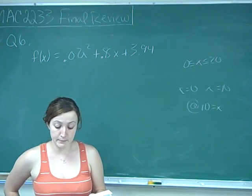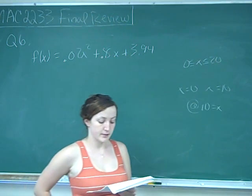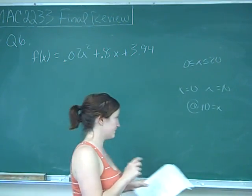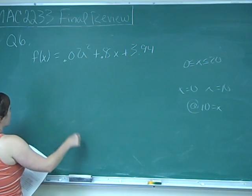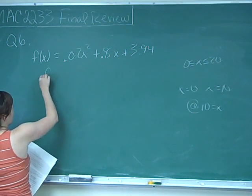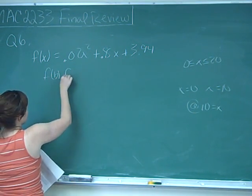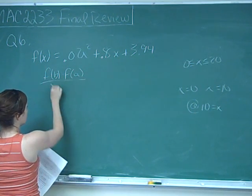Write the rate at which the consumption is changing from 0 to 10 years and at 10. We're looking for average rate of change and that's just f of b minus f of a all over b minus a.